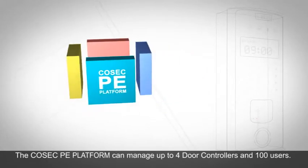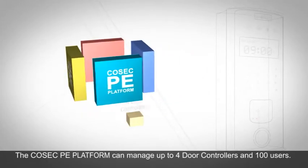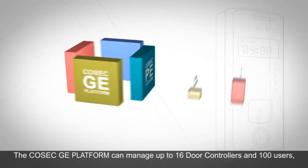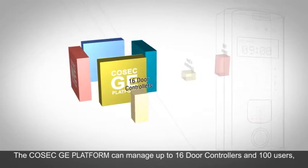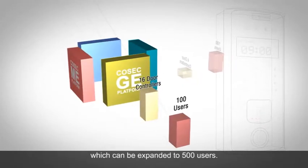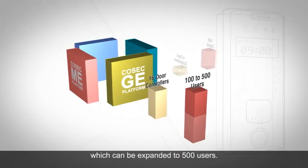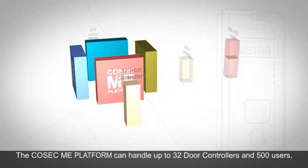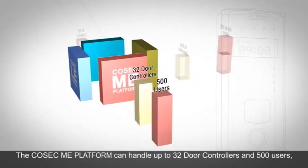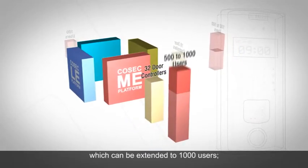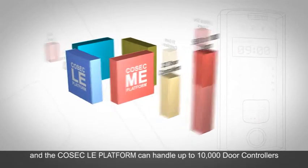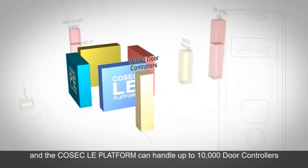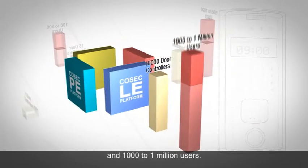The Cosec PE platform can manage up to 4 door controllers and 100 users. The Cosec GE platform can manage up to 16 door controllers and 100 users, expandable to 500 users. The Cosec ME platform can handle up to 32 door controllers and 500 users, extendable to 1,000 users. The Cosec LE platform can handle up to 10,000 door controllers and 1,000 to 1 million users.